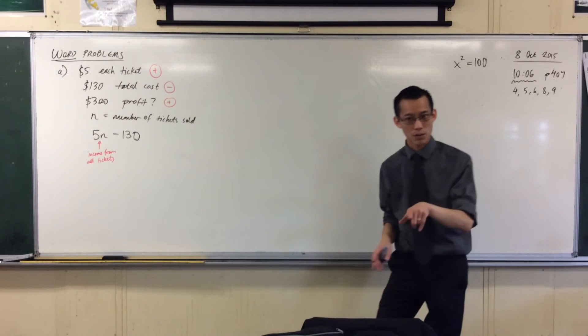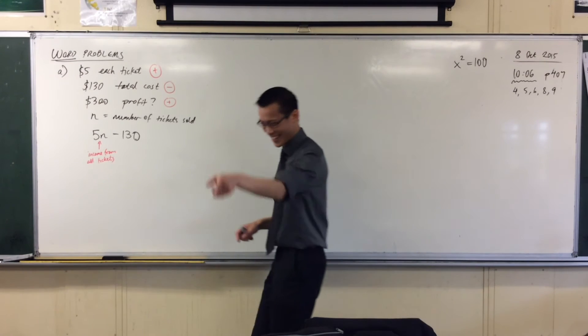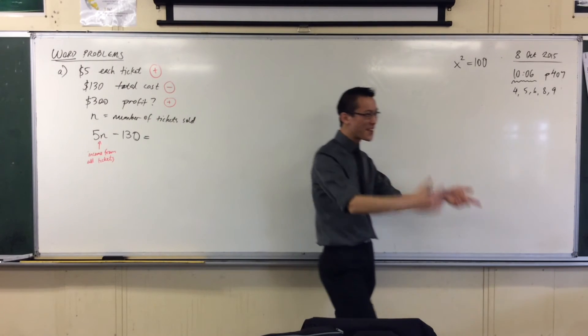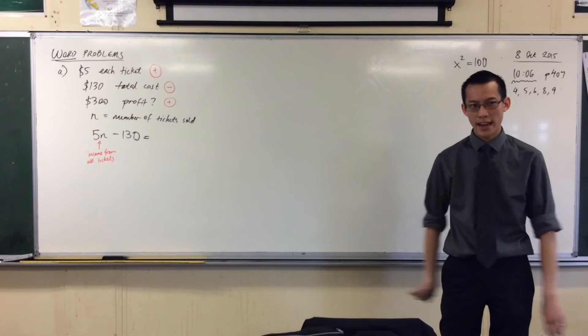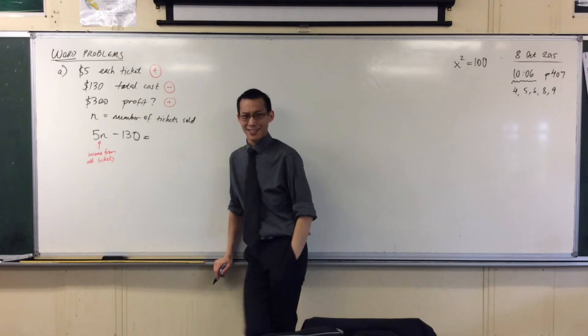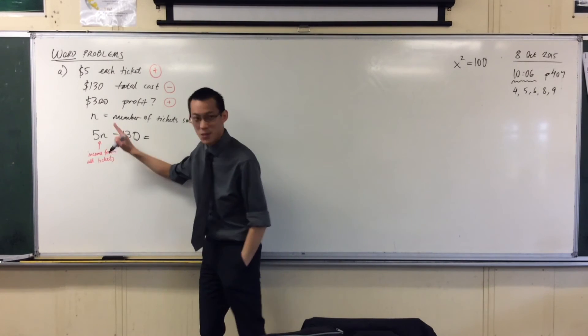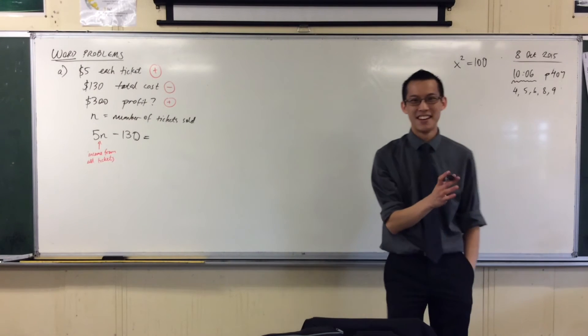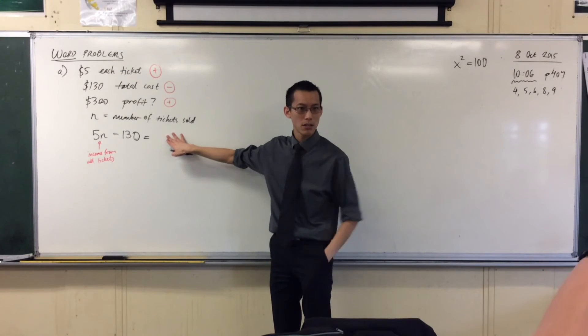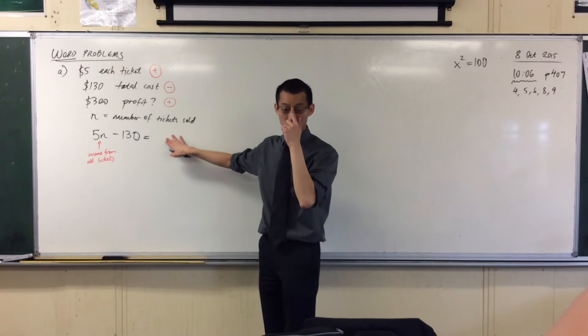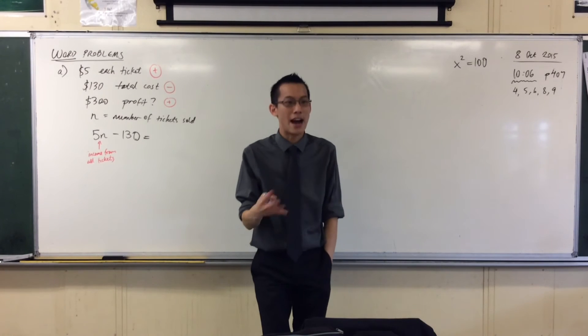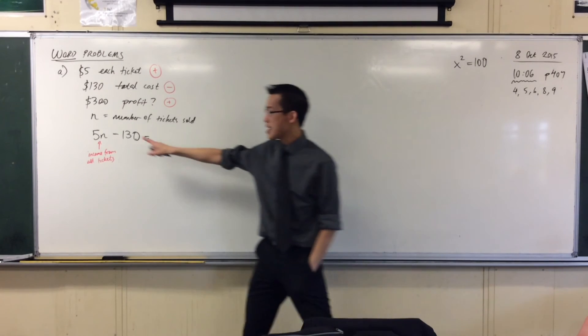So that's what I've got so far. So 5N minus 130. Now this will give me the profit. Now just predict for a second what would happen if, for instance, suppose our marketing campaign doesn't do a very good job and I don't sell any tickets. No tickets. That wouldn't be very good, would it? What would it mean for how much I earn at the end? Yeah, Ethan? You'd lose $130. Yeah, good. As bankers say, I'd be in the red. I haven't made any money at all. In fact, I've lost money. I'm in debt. That kind of sucks, right? But that's what would happen if N was zero.